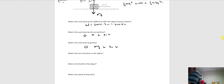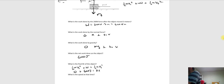Work done by gravity is also zero for the same reason — mg is perpendicular to the velocity. So the net work done on the object is the sum of all three work terms, which is 600 joules. For the final kinetic energy: initial kinetic energy is zero, work is 600 joules, so the final kinetic energy equals 600 joules.